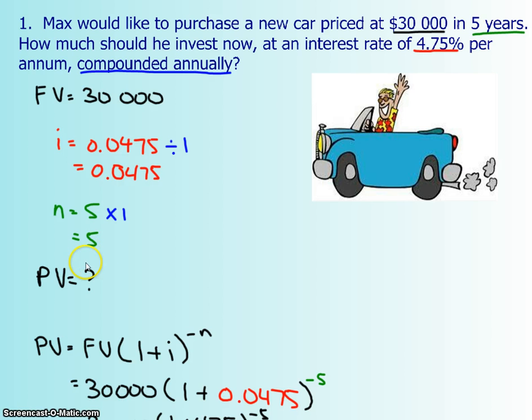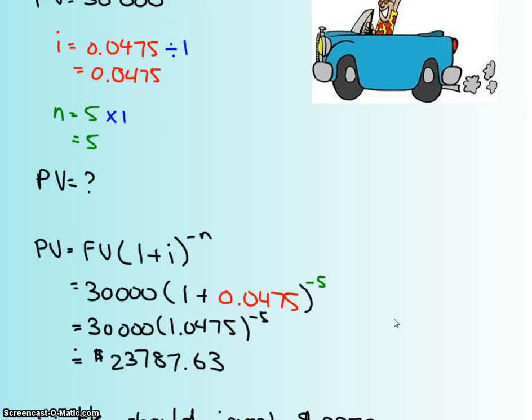You want to know how much he should invest at the moment. So we're going to put everything into the formula, and I decided to use the negative exponent formula just because I like multiplication. So here's your FV, you put it right here, and then your I goes right in there, and then your N goes right in here, and you just do BEDMAS.